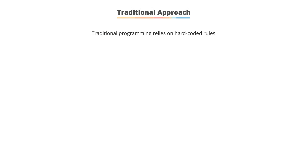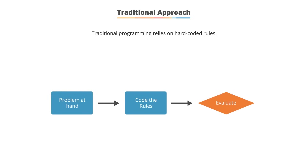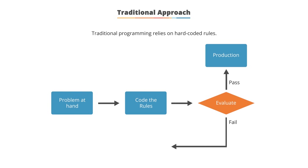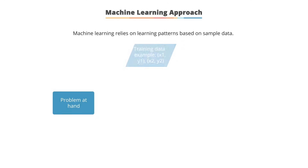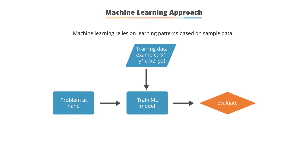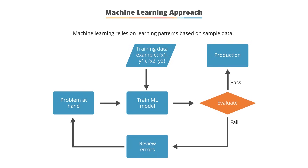In the traditional programming approach, you hard-code the decision rules for a problem, evaluate the results, and if satisfactory, deploy in production. If not, you review errors, change the program, and evaluate again — this iterative process continues until expected results are achieved. In the machine learning approach, decision rules are not hard-coded; instead, a model is trained with training data to learn the relationship between input and output. This trained model is evaluated against test data, deployed if satisfactory, or retrained with changes if not.